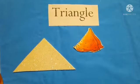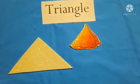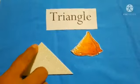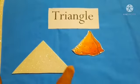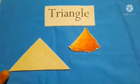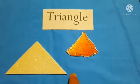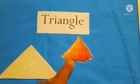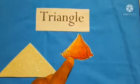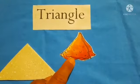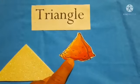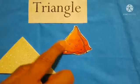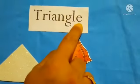Today we will do triangle again. Triangle is the shape with three corners and is called a triangle. A samosa is triangle in shape, and we are going to see many more objects that come under the triangle shape.